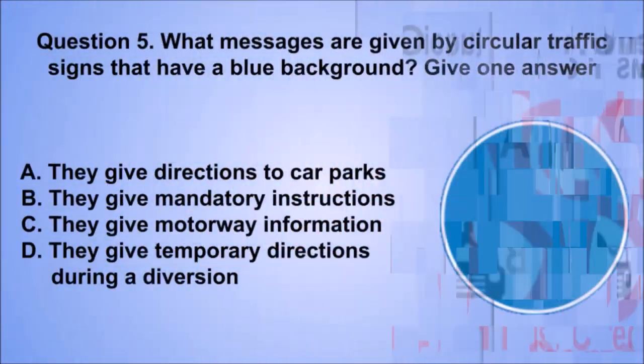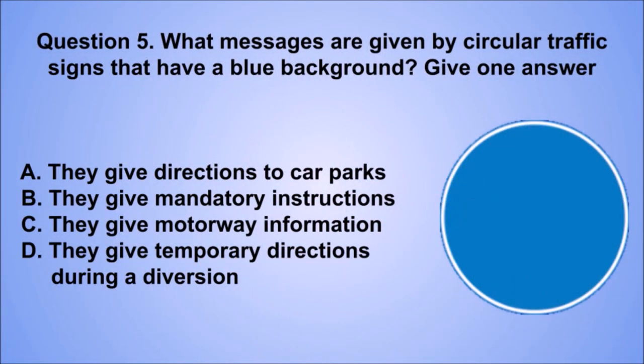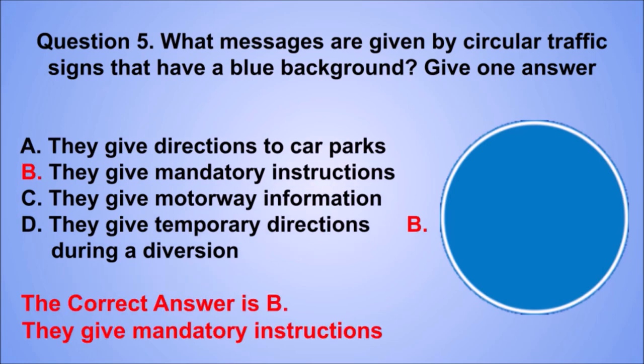Question 5. What messages are given by circular traffic signs that have a blue background? Give one answer. A: They give directions to car parks. B: They give mandatory instructions. C: They give motorway information. D: They give temporary directions during a diversion. The correct answer is B: They give mandatory instructions.